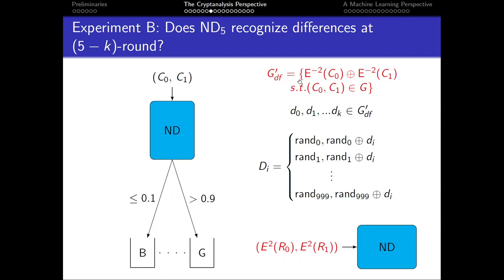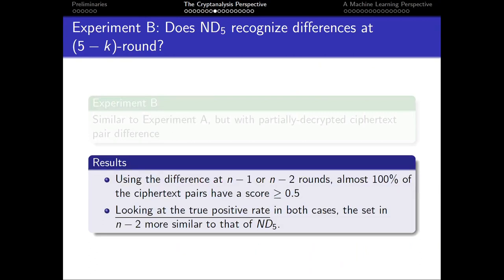We then repeated the experiment with changes: before computing the difference, we first decrypted by 2 rounds using the actual key, ranked and split pairs by their difference, then re-encrypted for 2 more rounds with another random key before evaluation. We also did a version decrypting by only 1 round and re-encrypting 1 round. In both cases, almost all pairs had a score above 0.5. The experiment with 2-round decryption matched more closely to the neural distinguisher's true positive rates, so we decided to investigate further.